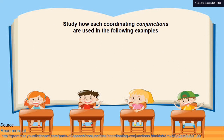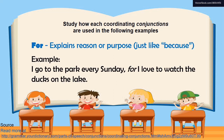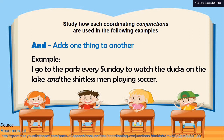Study how each coordinating conjunction is used in the following examples. 'For' explains reason or purpose, just like 'because.' For example: I go to the park every Sunday, for I love to watch the ducks on the lake. 'And' adds one thing to another. Example: I go to the park every Sunday to watch the ducks on the lake and the shirtless men playing soccer.